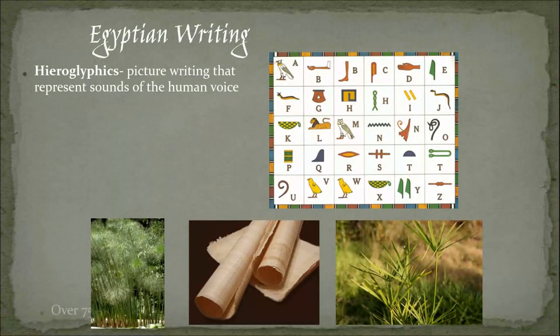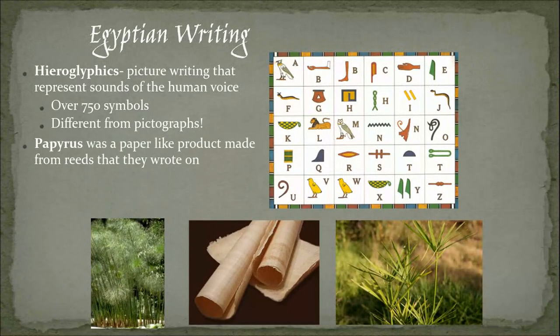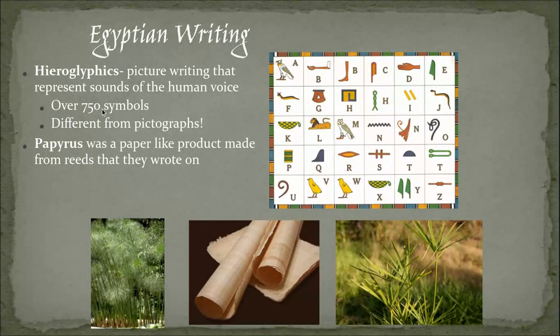Their hieroglyphics are probably what you know best about ancient Egypt — it's a form of picture writing, kind of like using emojis but way before cell phones. Their hieroglyphics actually represent sounds of their language, which is why there are over 750 symbols. It took us a long time to figure out how to read them.